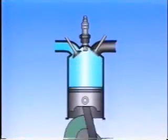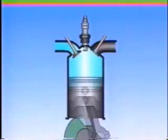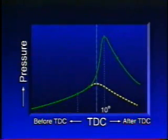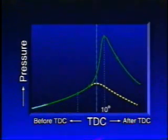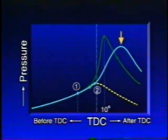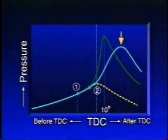So let's think about what happens if the engine speed increases. Because the ignition delay time between points one and two is constant, the angle through which the crank rotates in the same period of time increases. The point at which maximum pressure is reached lags behind 10 degrees. So in this case, it is necessary to advance the ignition timing.